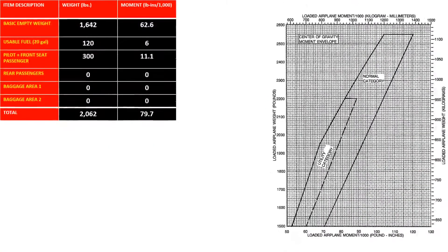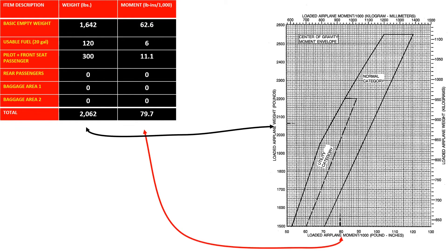Once all weights and moments are found, they must be added to establish total weight and moment. The figures are then transferred to the envelope graph. In this case, the aircraft is safe to fly and is located in the utility category.